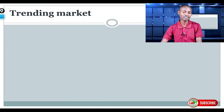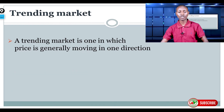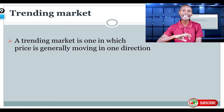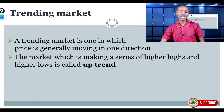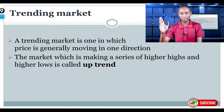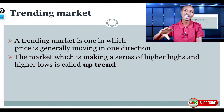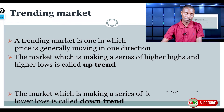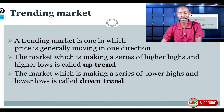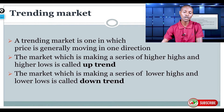Let's see in a bit more detail what a trending market is. A trending market is a market which is moving in one clear direction. If the market is trending in an upward direction — making a series of higher highs and higher lows — we call it an uptrend. And if the market is trending in a downward direction — making a series of lower highs and lower lows — we call it a downtrend.